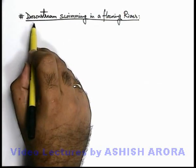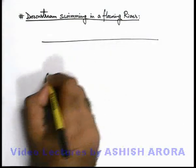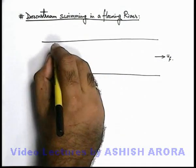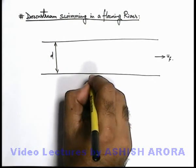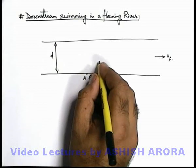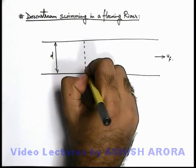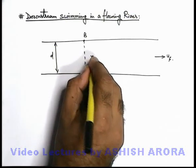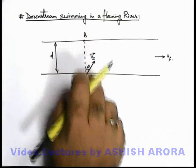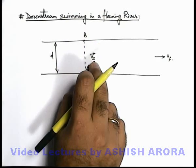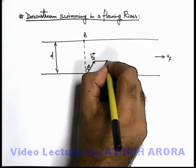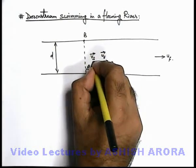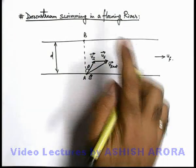Next, let's discuss downstream swimming in a flowing river. We have a river of width d with current u_f. The swimmer at location A jumps into the river in the downstream direction — the direction the river is flowing — with velocity v_s at an angle theta from the direction of normal to the bank. As soon as he jumps, the river velocity u_f is added to his swimmer velocity, and the net velocity of swimmer v_s_net is obtained by the vector sum of swimmer velocity and the water velocity.